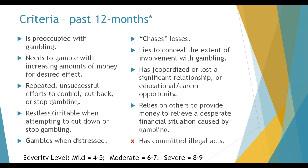The DSM-5 lists nine criteria for gambling disorder: preoccupation with gambling; needing to gamble with increasing amounts (tolerance); loss of control; withdrawal symptoms — restless or irritable when attempting to cut down; gambling when distressed; chasing losses; lying or hiding the extent of gambling; jeopardizing an opportunity; and relying on others to relieve financial stress. Mild is four to five criteria, moderate is six to seven, and severe is eight to nine, all occurring within a 12-month period.